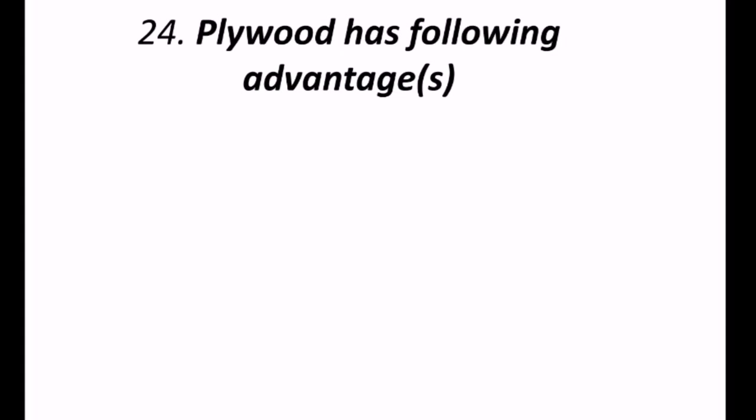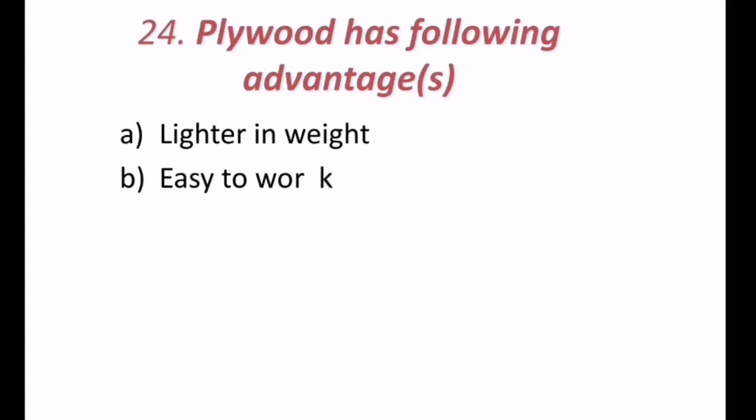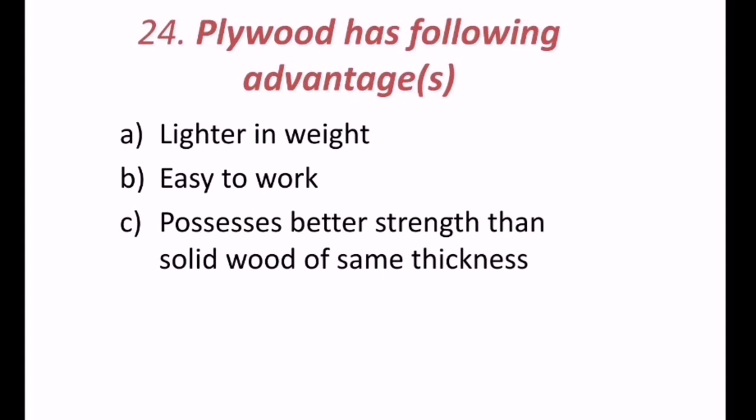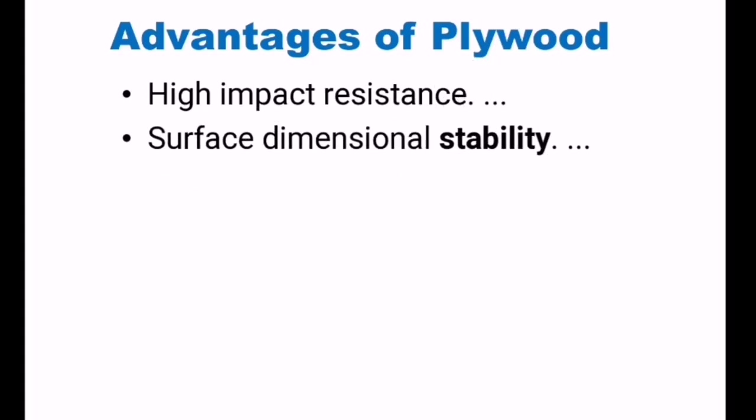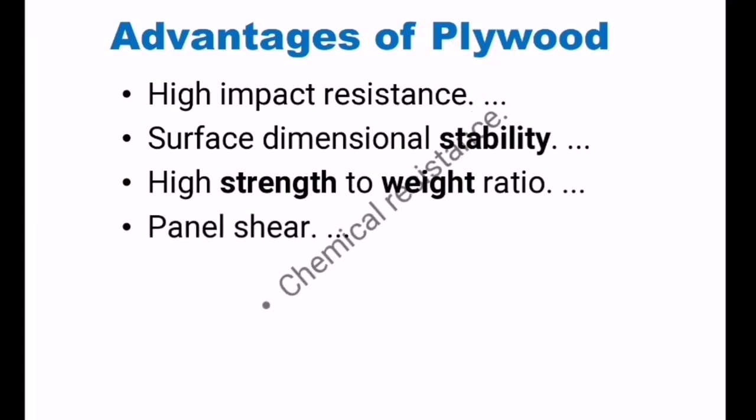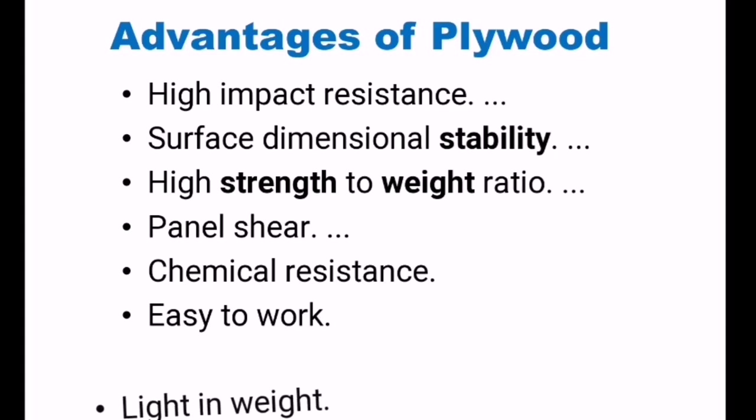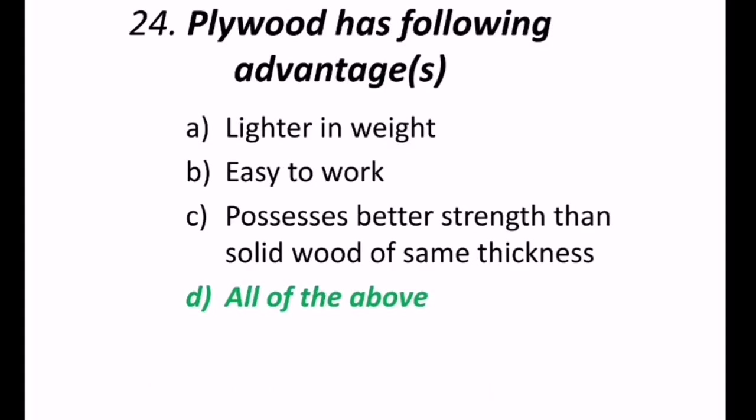24th question, plywood has following advantages. May be, lighter in weight, or easy to work, or possess better strength, than solid wood of same thickness, or all of the above. Here, you can see some of the advantages, like high impact resistance, surface dimensional stability, high strength to weight ratio, panel shear, chemical resistance, easy to work, or light in weight. So with this information, you can say, lighter in weight, easy to work, and possess better strength. So all of the above is the correct answer. Hence, D is the correct answer.